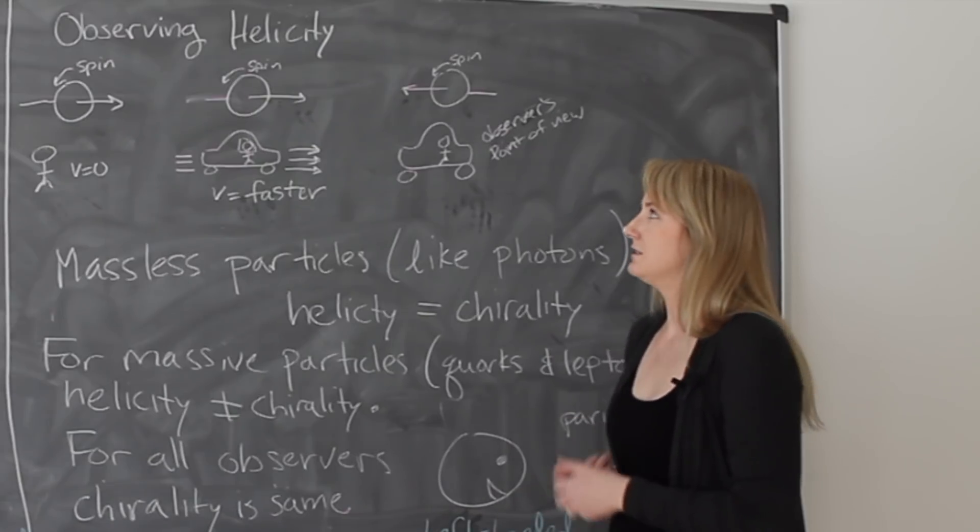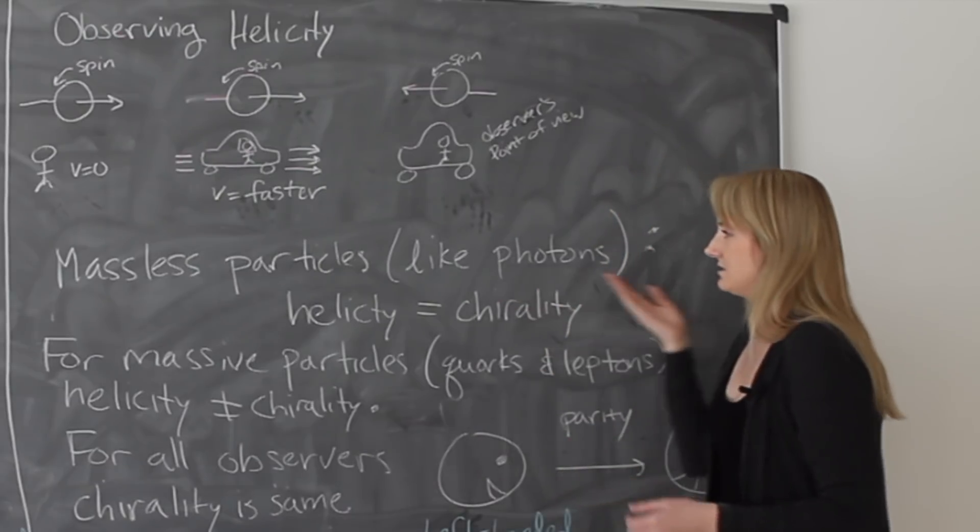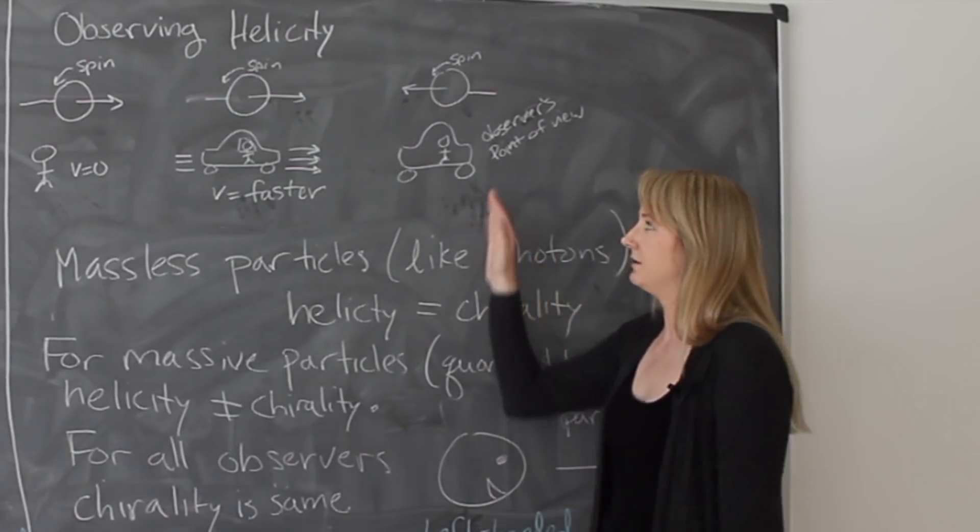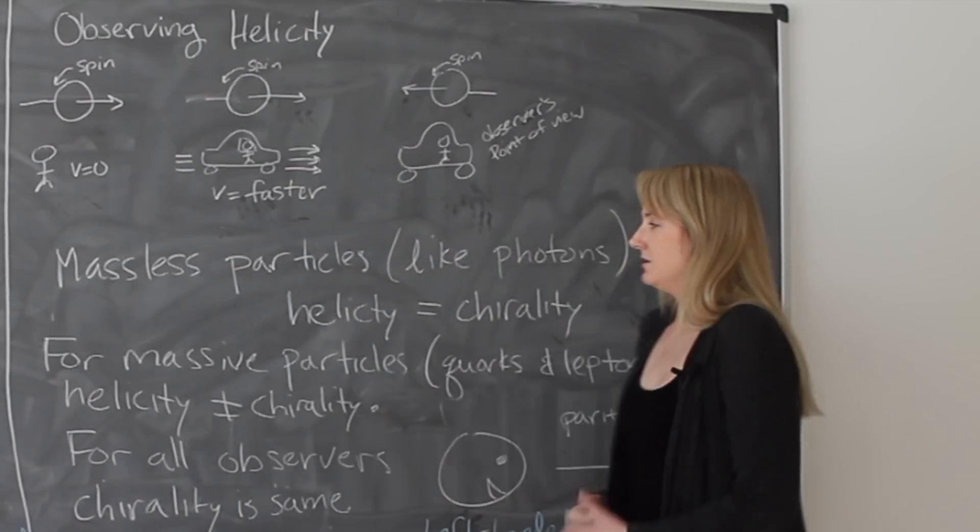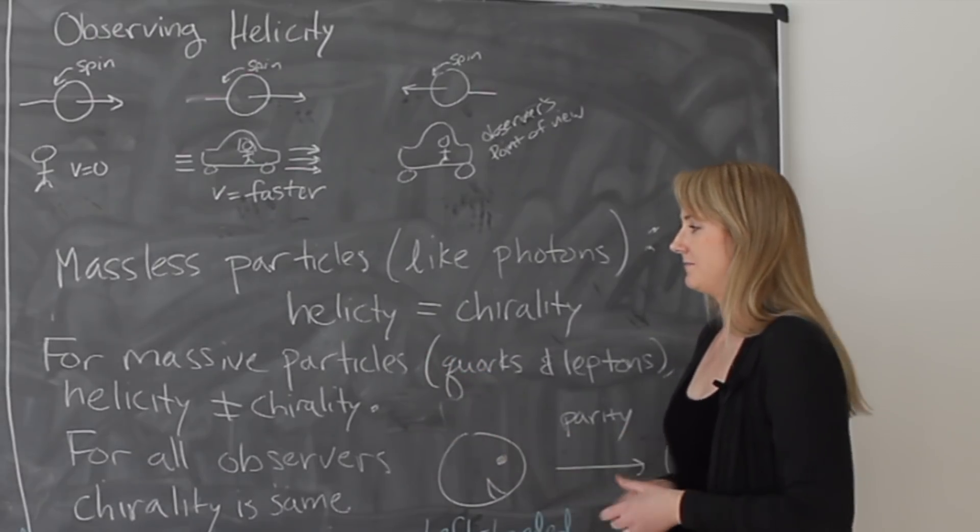So some particles, helicity is exactly equal to chirality, and those particles are massless. So massless particles, like photons, always move the same speed no matter what speed the observer is going. So for photons, helicity just is chirality. No matter how fast you're going, the helicity is always the same.